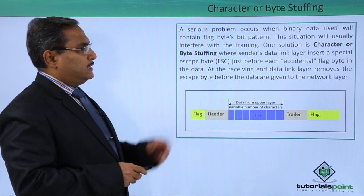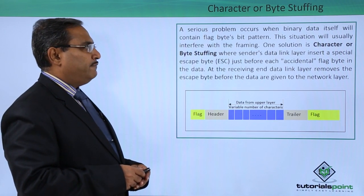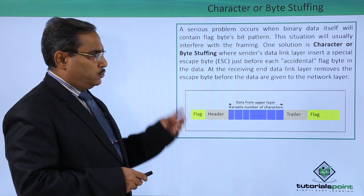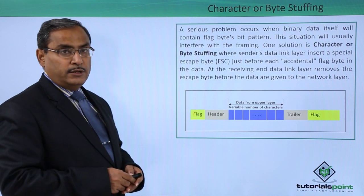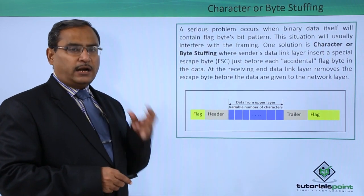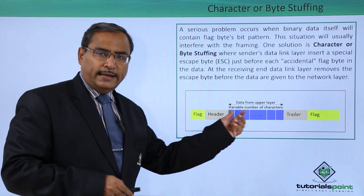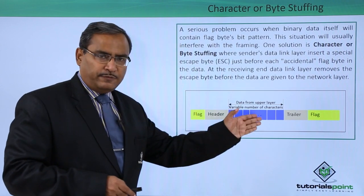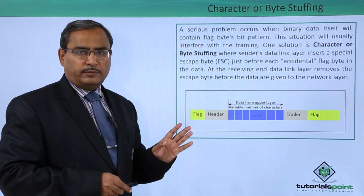A serious problem occurs when binary data itself contains flag bytes bit pattern, and this situation will usually interfere with the framing. We have multiple flags: one flag at the starting denoting the start of the frame, and one flag at the end denoting the end of the frame, with the respective other portions of the frame in between.